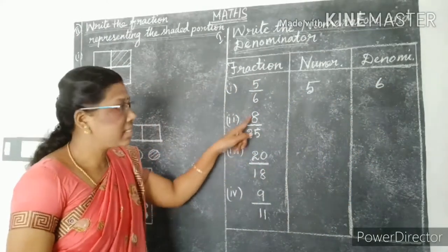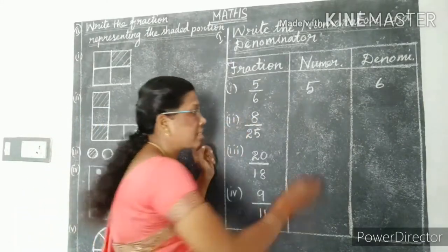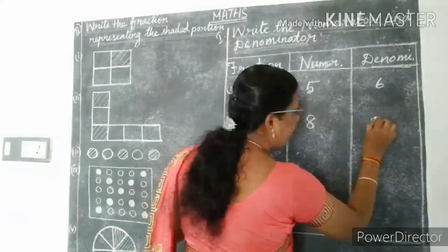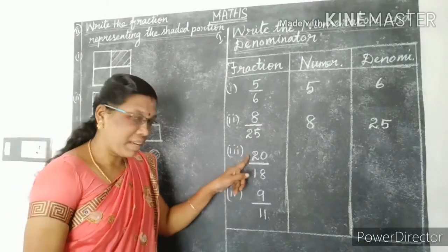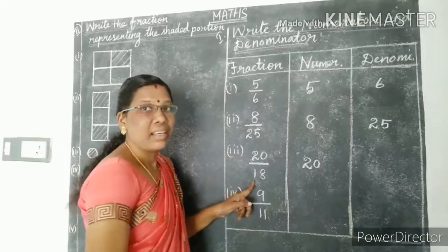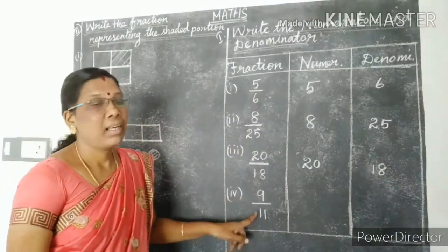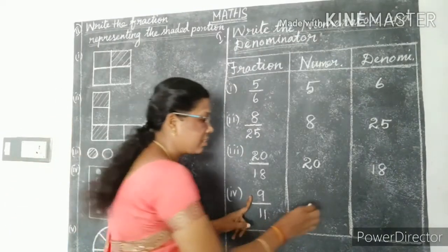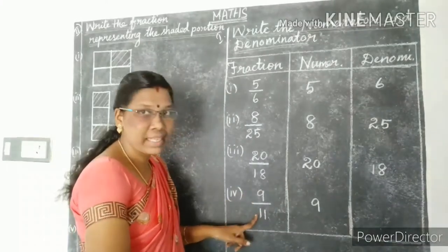The denominator is six. See the next one: eight divided by twenty-five. The numerator is eight. The denominator is twenty-five — lower part of the fraction. See the next: twenty divided by eighty. Numerator is twenty. The denominator is eighty. See the next: nine divided by eleven. Upper part is numerator, so numerator is nine. The lower part is denominator, so the denominator of nine by eleven is eleven.